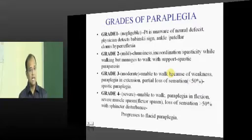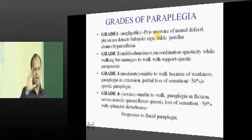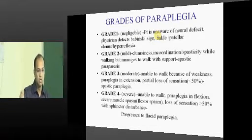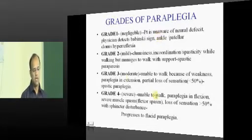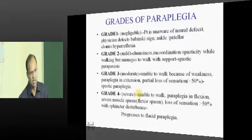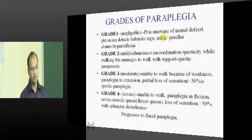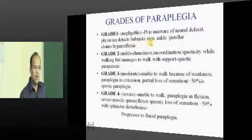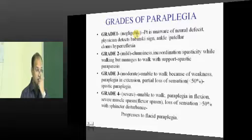When it comes down to paraplegia specifically because of tuberculosis, you again have four types. The first type is negligible, where the patient is not aware of the tuberculosis pathology affecting the cord. The patient will come walking, but once you examine the knee jerk it will be exaggerated. The doctor will detect the pathology — this is the stage where you have to detect tuberculosis paraplegia, otherwise it will go into the next stage where treatment difficulties will come in.